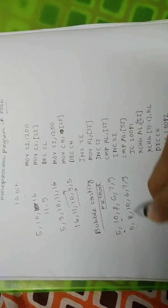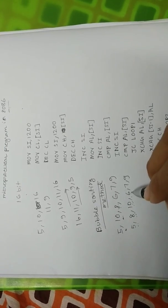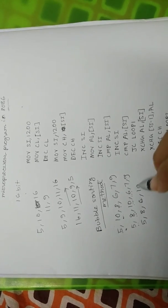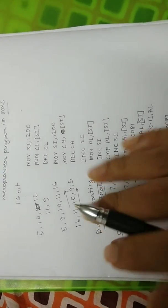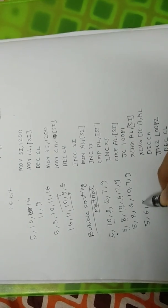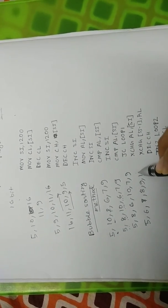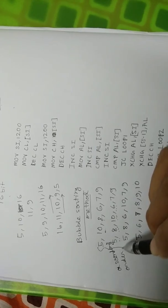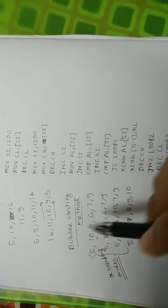Repeating the process: 5 is less than 8, no change; 8 is less than 10, no change; but 10 is greater than 6, so exchange. After repeating the procedure again and again we eventually get the final ascending sequence: 5, 6, 7, 8, 9, 10.